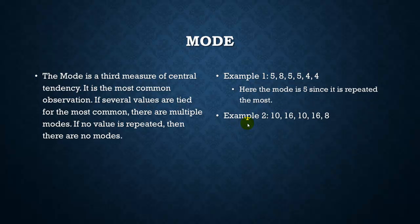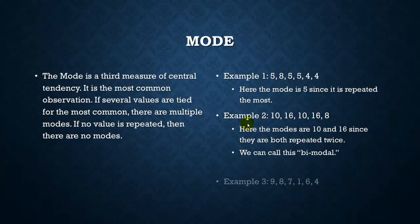In our second example, 10, 16, 10, 16, 8, both 10 and 16 are repeated twice, so they are both modes. In example 3, we have 9, 8, 7, 1, 6, 4. Since none of these are repeated, there is no mode. One thing I'd like to point out, that in a case where we have two different modes, we often call this distribution bimodal. You can also be trimodal or whatever else, but bimodal is one of the more common things that you might see in statistics, and are usually kind of an interesting situation.